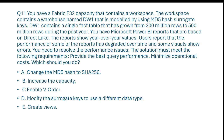Question 11. You have a Fabric F32 capacity that contains a workspace. The workspace contains a warehouse named DW1 that is modeled using MD5 hash surrogate keys. DW1 contains a single fact table that has grown from 200 million rows to 500 million rows during the past year. You have Microsoft Power BI reports that are based on Direct Lake. The reports show year-over-year values. Users report that the performance of some of the reports has degraded over time and some visuals show errors.